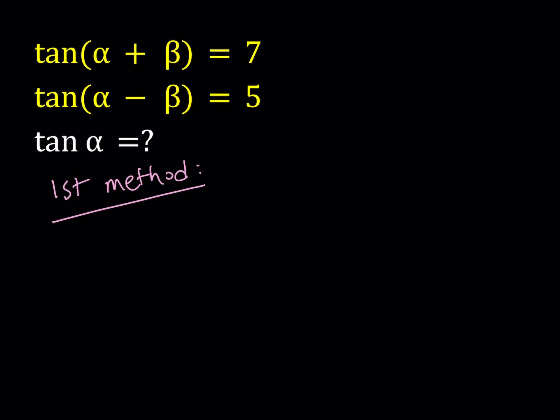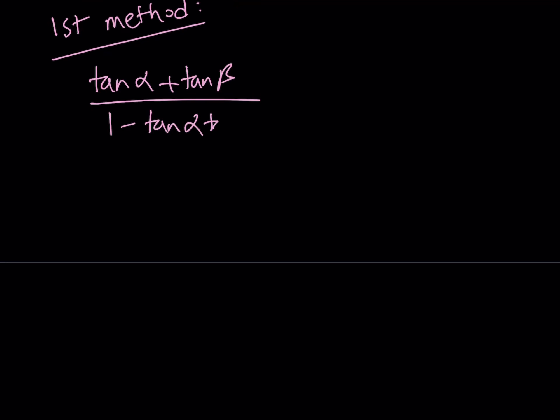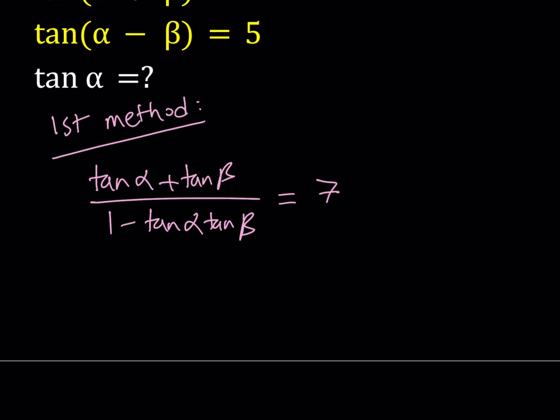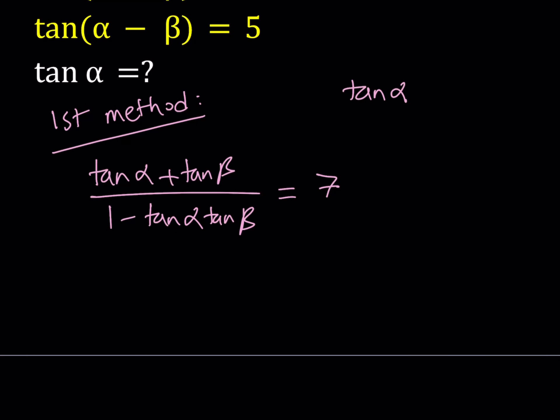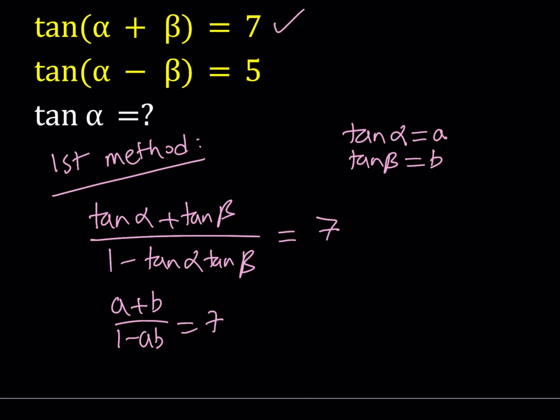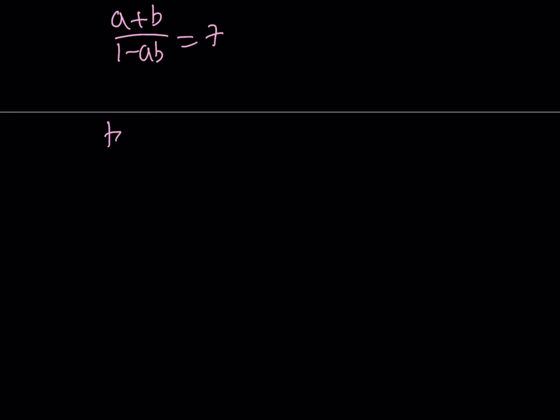I'm going to be using the formulas for tangent of a sum and tangent of a difference. Tangent alpha plus beta can be written as tangent alpha plus tangent beta divided by 1 minus tangent alpha times tangent beta. Let's set it equal to 7. At this point it might be meaningful if we just use substitution. Let's say tangent alpha equals a and tangent beta equals b.